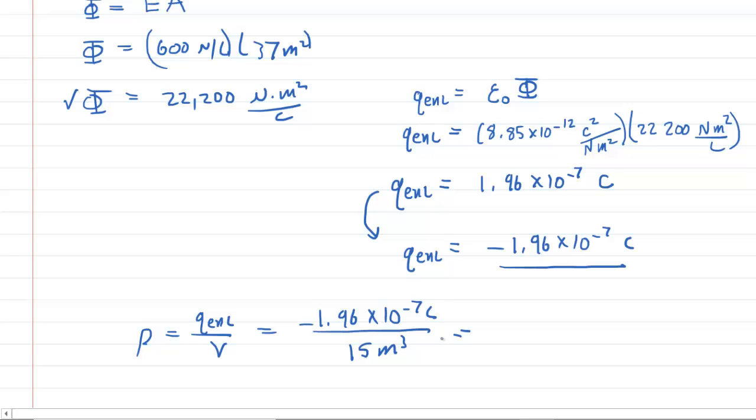We'll pick up the calculator. We'll divide. We're going to get about negative 1.31 times 10 to the minus 8. And then if we look carefully, we have coulombs divided by meters cubed. So that's going to be our unit. And there is the correct answer to part A of the question.